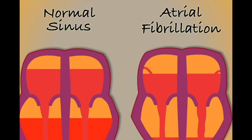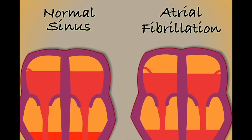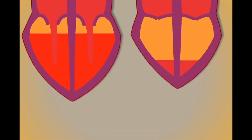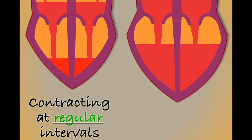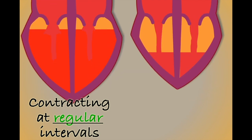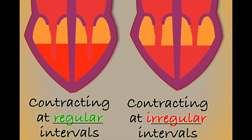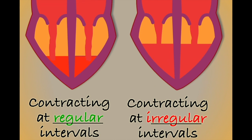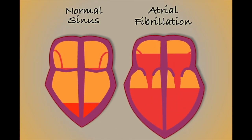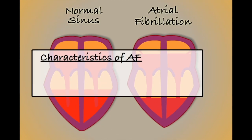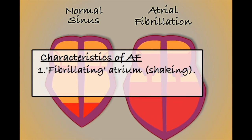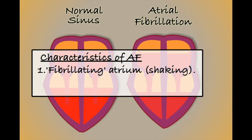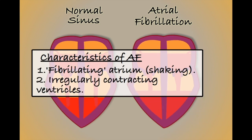The second obvious difference between the two hearts can be seen in the ventricles. The ventricles in sinus rhythm are contracting at regular intervals, while the ventricles in our AF animation are contracting at irregular intervals. These are the two defining characteristics of a heart in atrial fibrillation: atria that are fibrillating and ventricles that are contracting at irregular intervals.